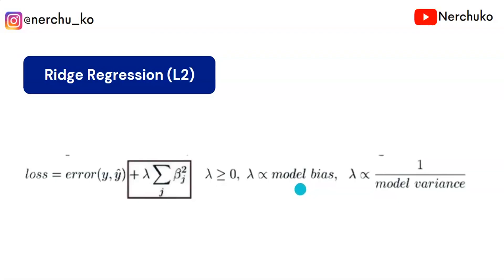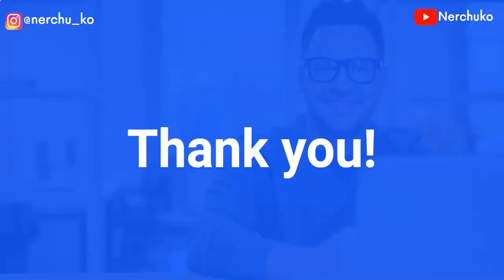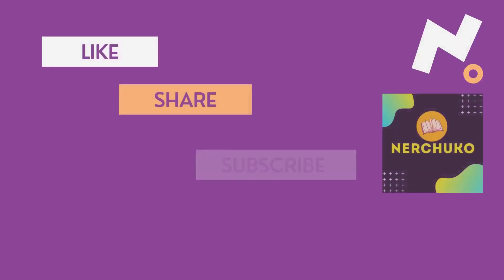We need to choose the lambda hyperparameter through hyperparameter tuning. A higher lambda value leads to underfitting, while a lower lambda value may not control overfitting well. If you liked this video, please like, share, and subscribe to the channel. Keep learning. Thank you.